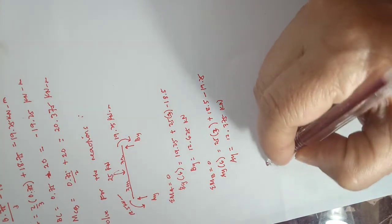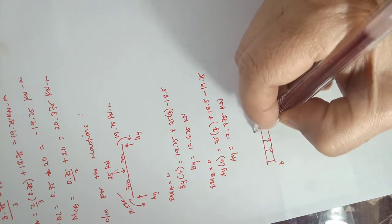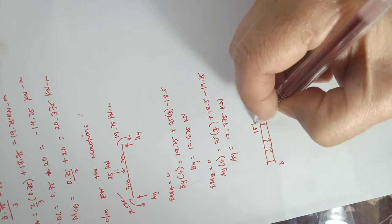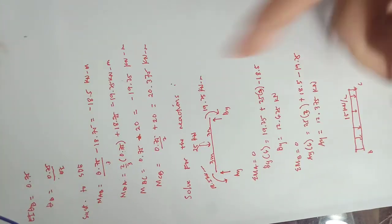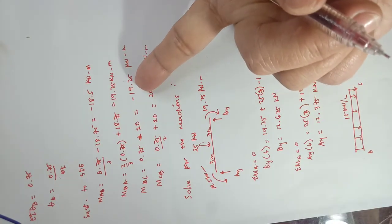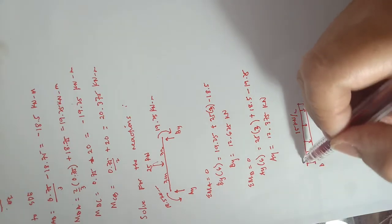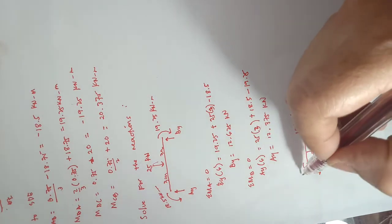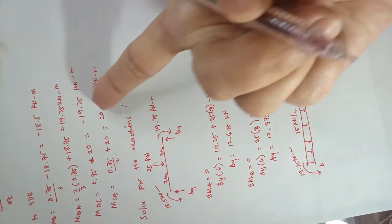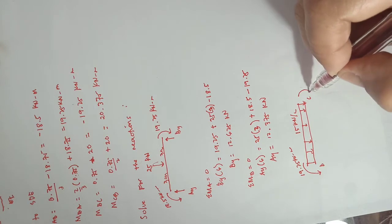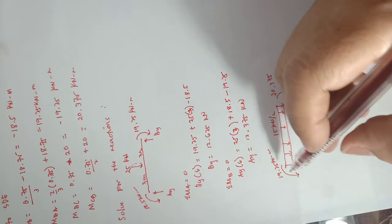For the other span, member BC is loaded with a uniformly distributed load of 15 kilo-newtons per meter. The end moment M_bc is negative 19.25, so it acts counterclockwise, and M_cb is positive so it is clockwise at 20.375 kilo-newton meters. The length of span BC is 4 meters.